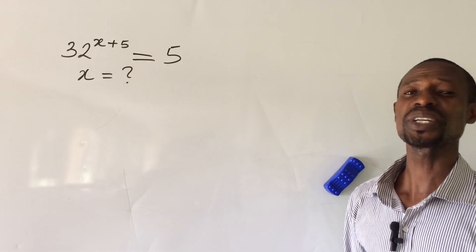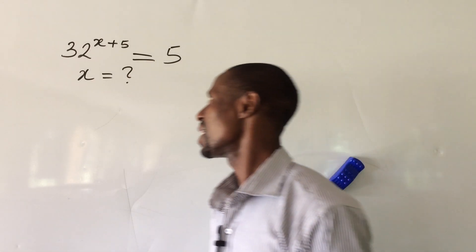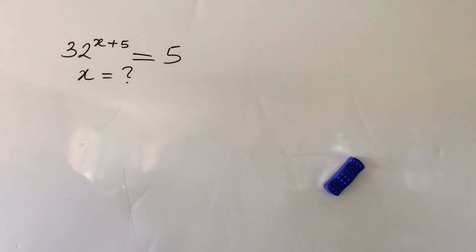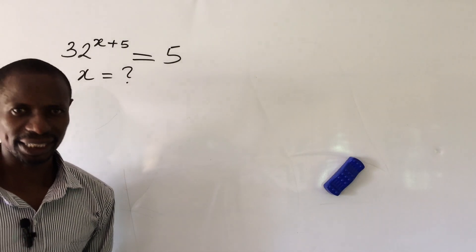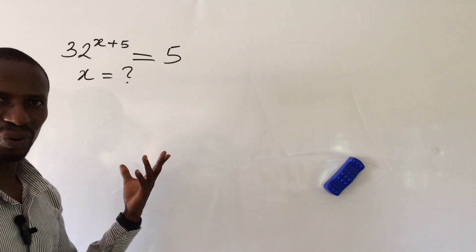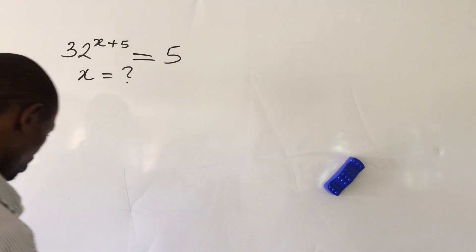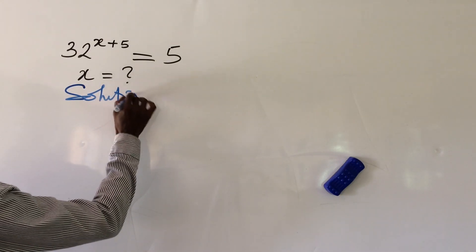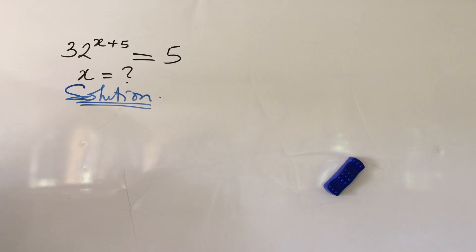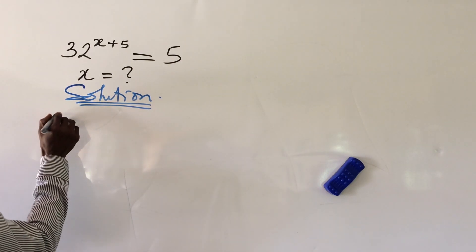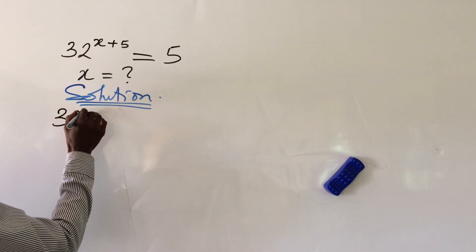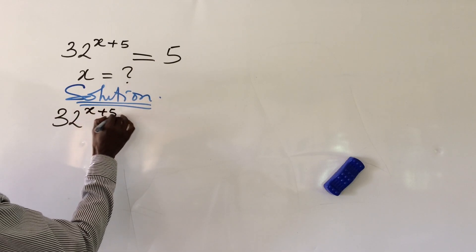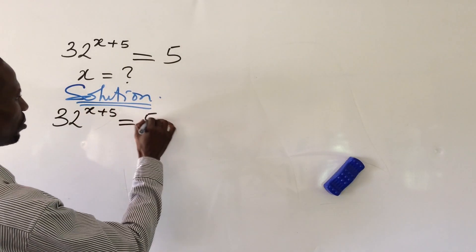Let's dive into today's challenge without much waste of time. The question reads: 32 to the power of x plus 5 equal to 5. What would be the possible value of x? Now, let's go up without much waste of time. We put down our question. But before then, let's take selection. Okay, so the question again is 32 to the power of x plus 5 equal to 5.